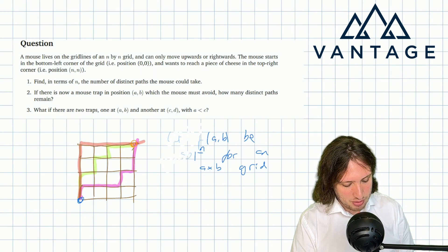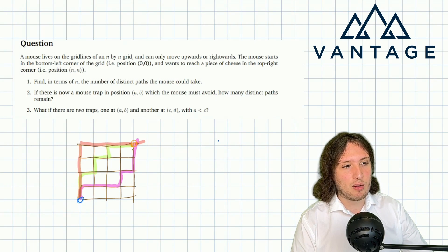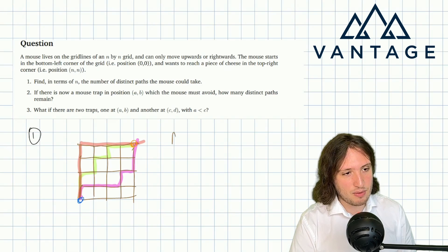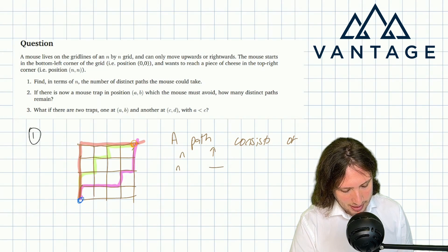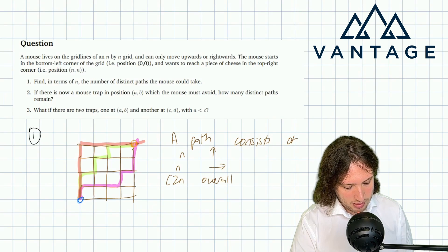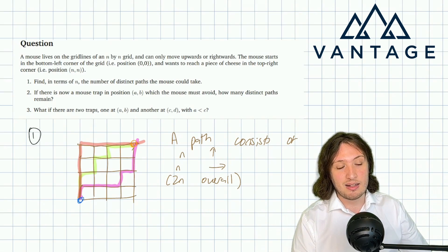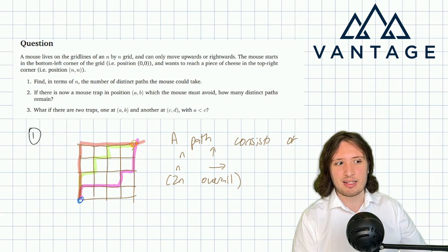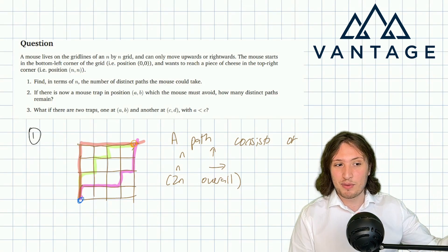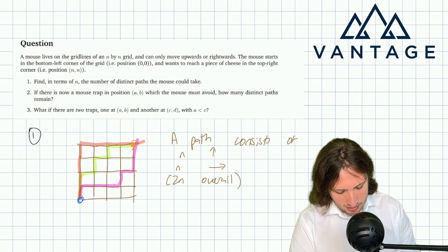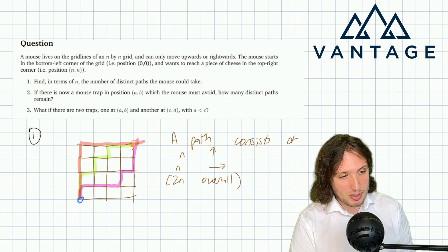What else could we do? We can think about what must be true of any path in general. A path must consist of n up steps and n rightward steps — 2n steps overall — because the mouse has to end up n higher and n further right than where it started. Whatever the mouse does, it must make n of each move type. Crucially, any ordering is perfectly legal; there's no way to accidentally go off the grid by using rightward moves too early.